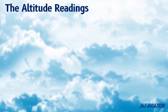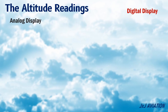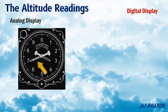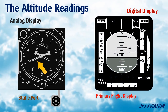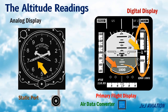The altitude readings may be displayed on a conventional analog display or a digital display. The conventional display has a few pointers or needles that give the altitude indication, and the static port would be directly connected to the altimeter unit. In a digital display, the altitude readings are located towards the right of the primary flight display, and the radio altimeter readings are shown at the bottom of the primary flight display. For a digital altitude display, a suitable air data converter is required for converting the static pressure to electronic data.